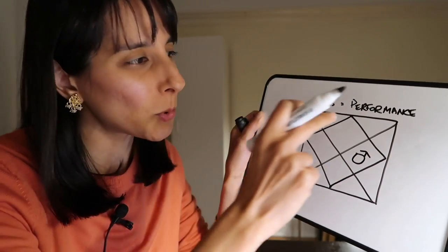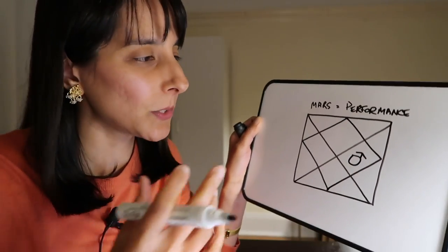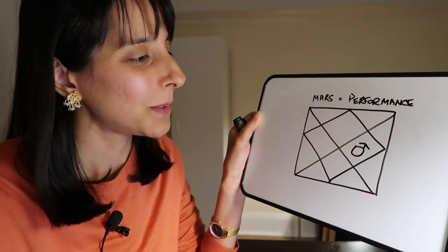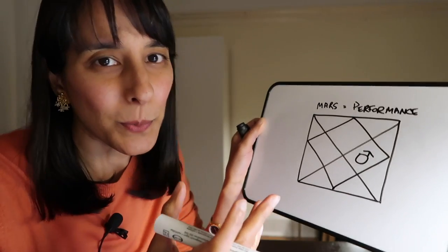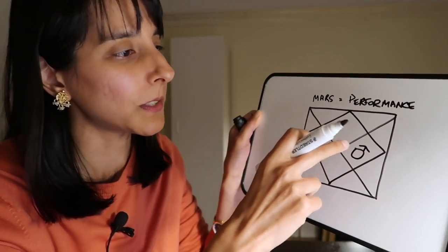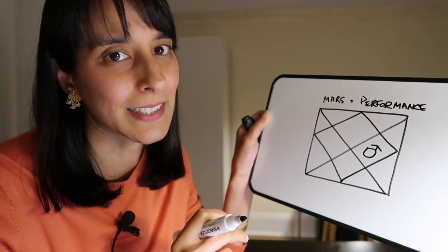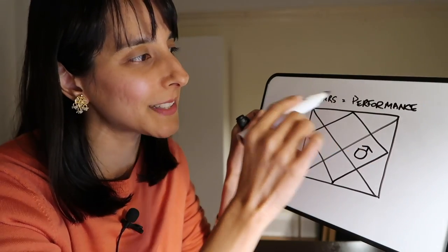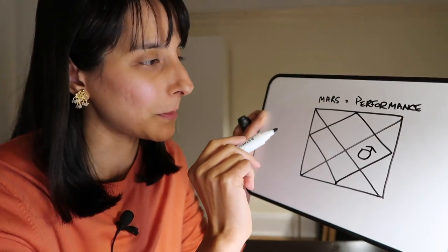Mars gets bored up here in the 12th. He's like I want to do something. He gets bored here in the 4th. He doesn't want to be at home putting his feet up. He wants to be out on the battlefield. He wants to be here in the 10th house. He's all about doing. Doing or performance, these are really important words here for Mars.